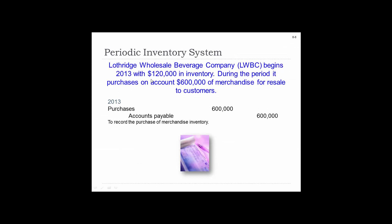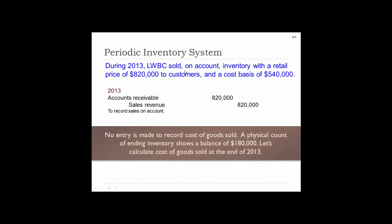Let's start with the same information. Lothridge Beverage begins with $120,000 in inventory and purchases $600,000 on account. In a periodic system, we're not going directly to the inventory account — we're going to a purchases account: debit purchases $600,000, credit accounts payable $600,000. During the year they sold inventory to a retailer at a price of $820,000, cost basis $540,000. Accounts receivable $820,000, sales revenue $820,000. No entry is made to cost of goods sold. A physical count of ending inventory shows a balance of $180,000.